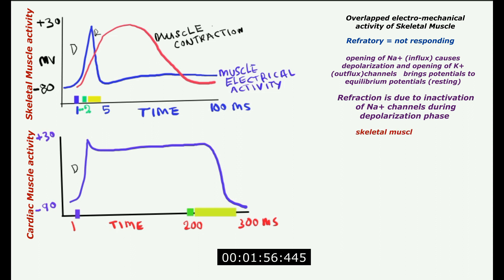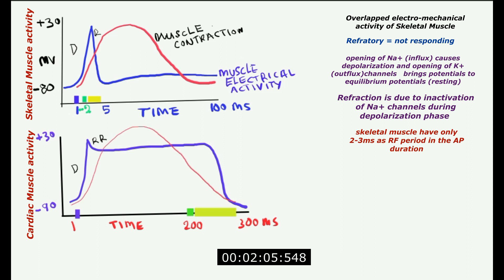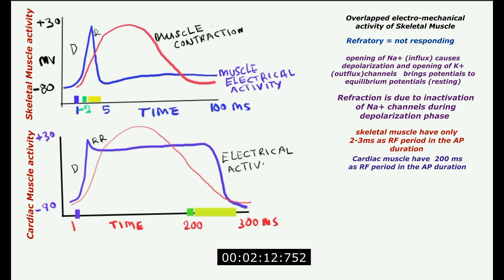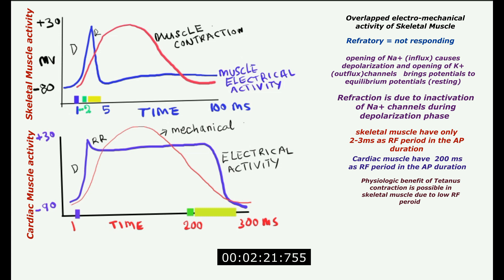The mechanical activity and contractility of the single cardiac muscle fiber takes a longer duration. Since the electrical activity of the cardiac muscle covers up to 300 milliseconds, about 200 milliseconds of that electrical activity is occupied by the plateau stage of the cardiac action potential. In contrast, the skeletal muscle action potential lasts only about 5 milliseconds.